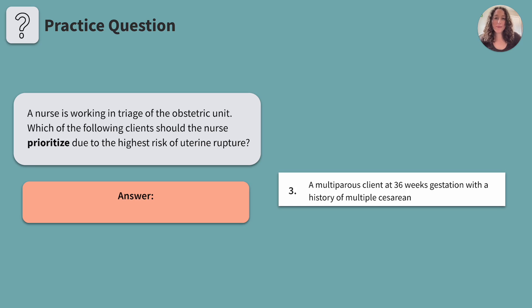Number three: a multi-parous client at 36 weeks gestation with a history of multiple cesareans. A client who has had multiple cesareans is at increased risk for uterine rupture. The scar tissue from previous surgeries becomes less and less flexible, putting the uterus at risk for tearing. This client is definitely our highest risk at this point, but let's review our last answer choice before making our final decision.